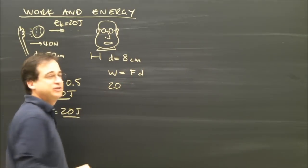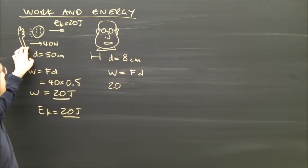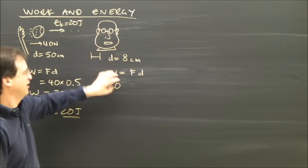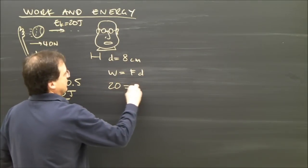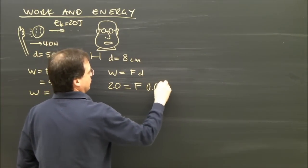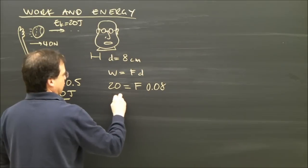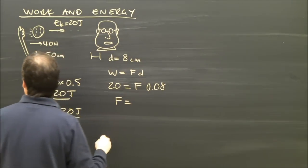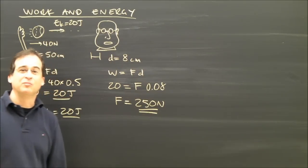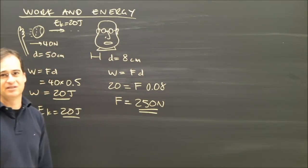Work is force times distance. I've got to get rid of 20 joules of kinetic energy. I did 20 joules of work, I've got 20 joules of kinetic energy. I've got to get rid of that kinetic energy, so I've got to do work. And it's the force times the distance, which is 0.08. So the force applied is 250 newtons. That's how much force it's going to take to stop this thing.